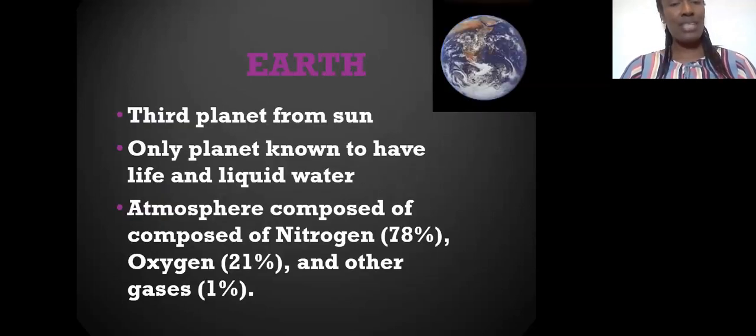Earth, like we said, is the home for every boy and girl. It is the third planet from the Sun, the only planet known to have life and liquid water. The atmosphere is composed of nitrogen 78%, oxygen 21%, and other gases. You should have learned this in science.